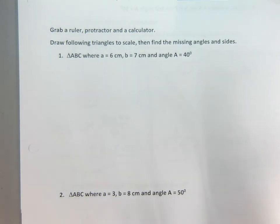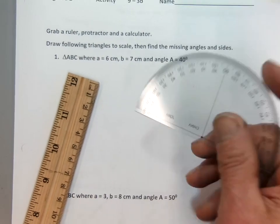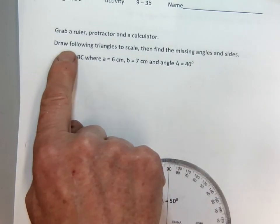All right everybody, today to do the lesson, you're going to need a ruler with centimeters and a protractor that does angles, because we're actually going to draw the following triangle.